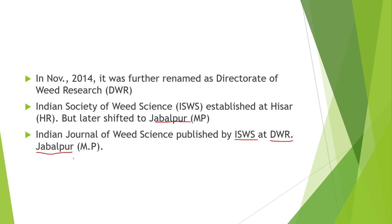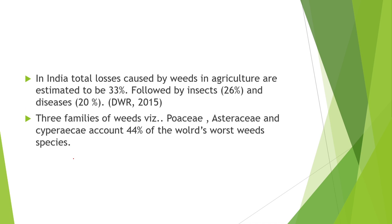As we know, mostly diseases, insects and weeds cause damage to agriculture crops. The maximum losses occur due to weeds, which is 33%, then by insects 26%, and then by diseases 20%.